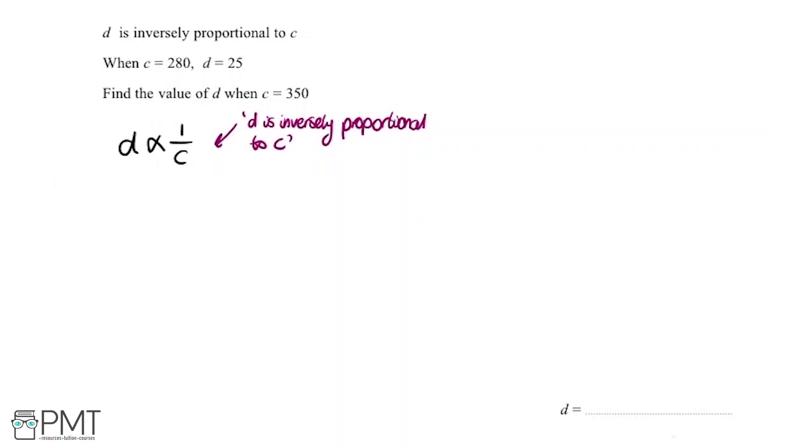Next step, what we do is we create an equation using a constant of proportionality which we introduce. So we take D here, we make an equation by saying equals and we multiply by a constant. In this case we're going to call it K. So K multiplied by what we had up here, so 1 over C. Here is our constant of proportionality.